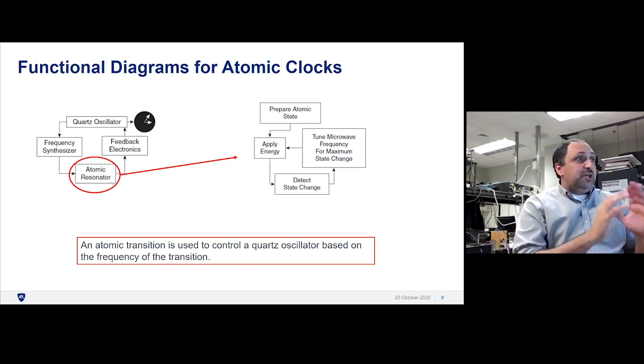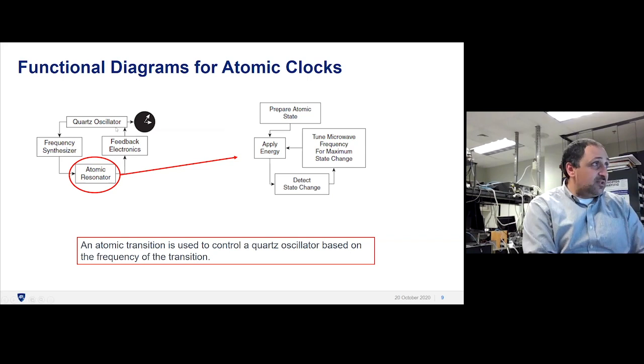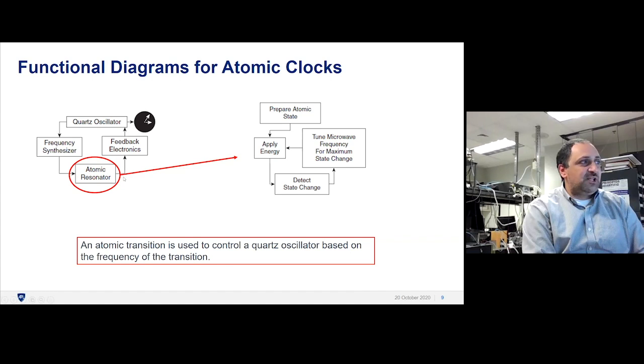Here's the basic diagram for all of the clocks. You have your atomic resonator, which has a certain transition frequency, which goes into feedback electronics, which regulates a quartz oscillator, which gives you a driving frequency that goes back into the atomic resonator to drive it. You'll see we have an error signal that comes out of the atomic resonator, which controls the feedback electronics.